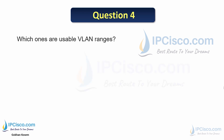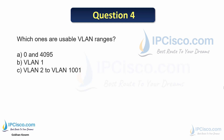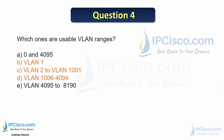Question 4: Which are the usable VLAN ranges — 0 to 4095, VLAN 1, VLAN 2 to 1001, VLAN 1006 to 4094, or VLAN 4095 to 8190? The answers are B (VLAN 1), C (VLAN 2 to 1001), and D (VLAN 1006 to 4094). These are the usable ranges of VLANs.